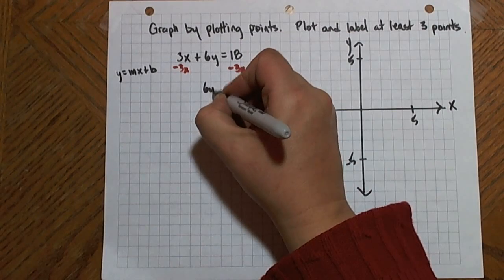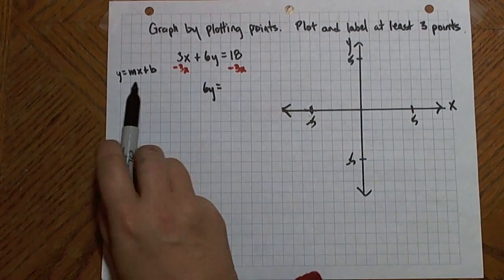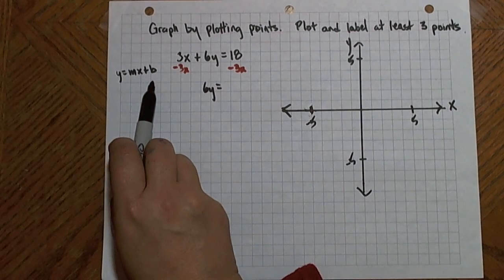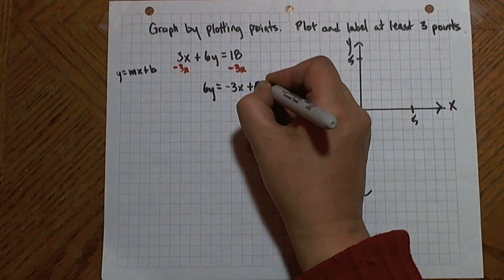So now I'll end up with 6y equals, I could write 18 minus 3x, but since I want the y equals mx plus b form, I'm going to put the x term first: negative 3x plus 18.